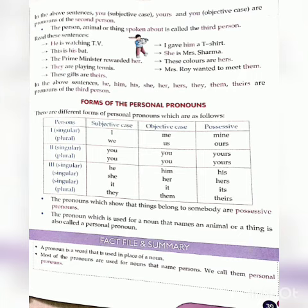The person, animal or thing spoken about is called the third person. Read the sentences: He is watching TV. I gave him a T-shirt. This is his bed. She is Mrs. Sharma. The prime minister rewarded her. These colors are hers. They are playing tennis. Mrs. Roy wanted to meet them. These gifts are theirs. In the above sentences, he, him, his, she, her, hers, they, them, theirs are pronouns of the third person.